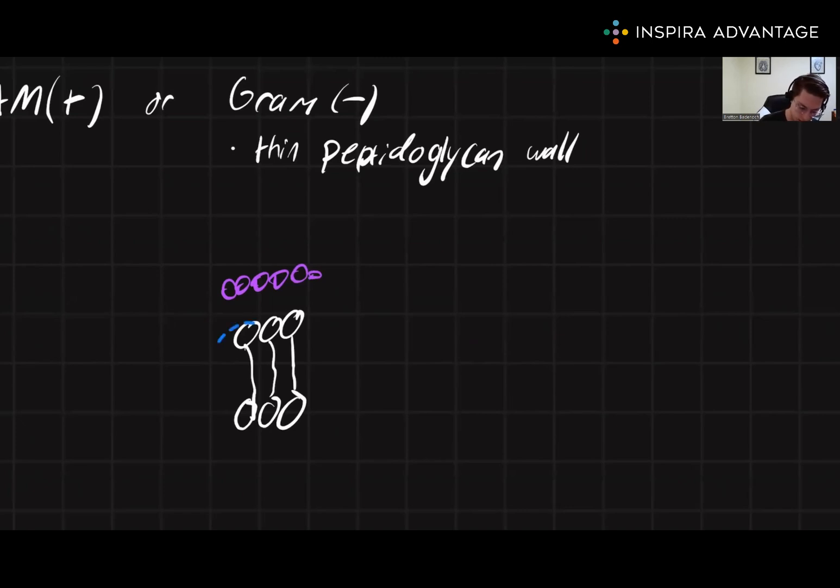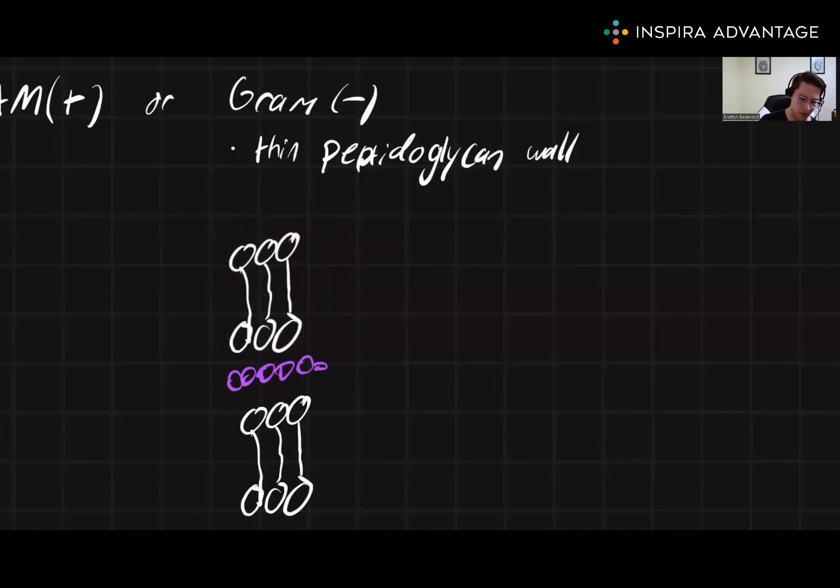And then above that, we have again a second cell membrane. Now, the second cell membrane is going to prevent any of the dye from showing up. So that's where this dark purple and white kind of averages to a pinkish red color.